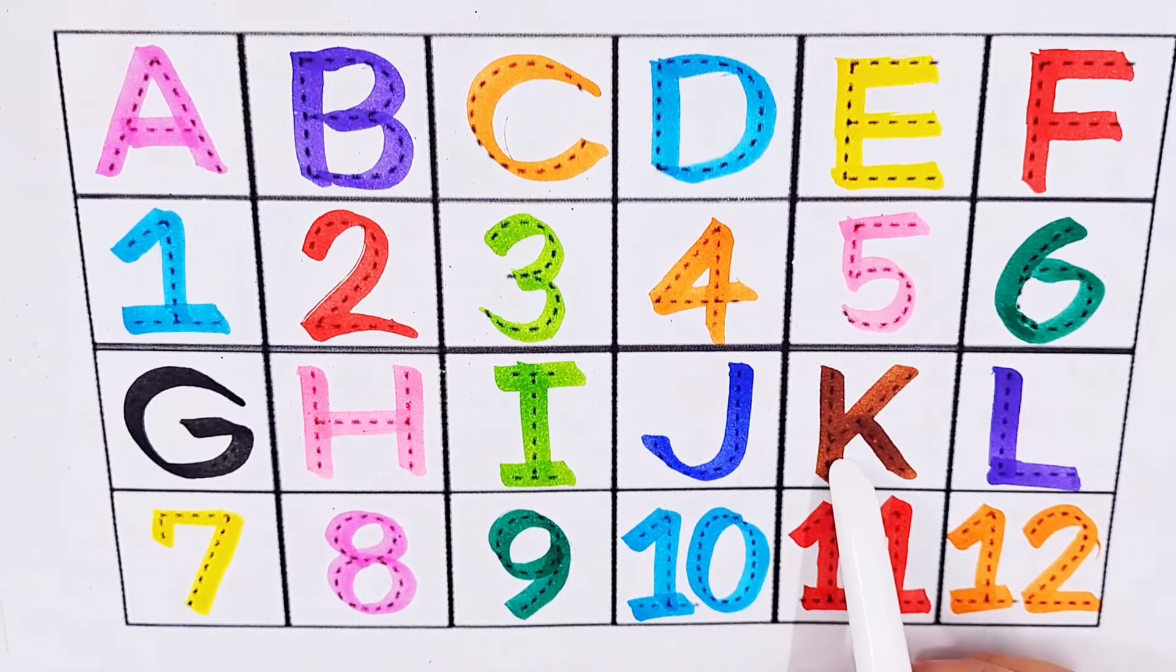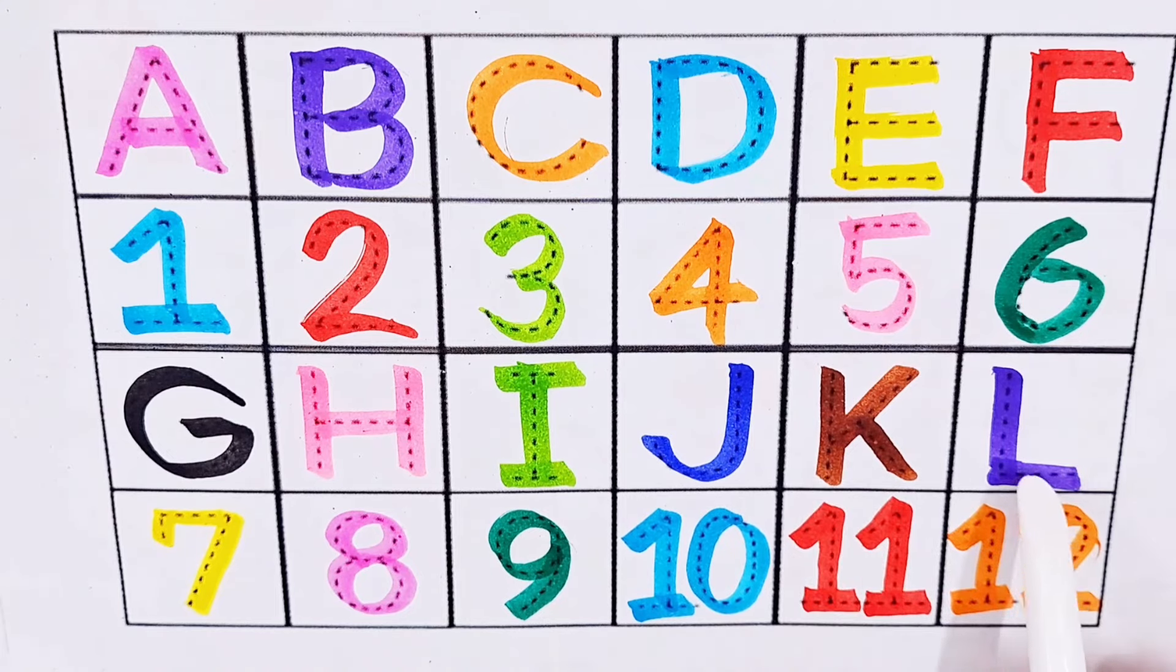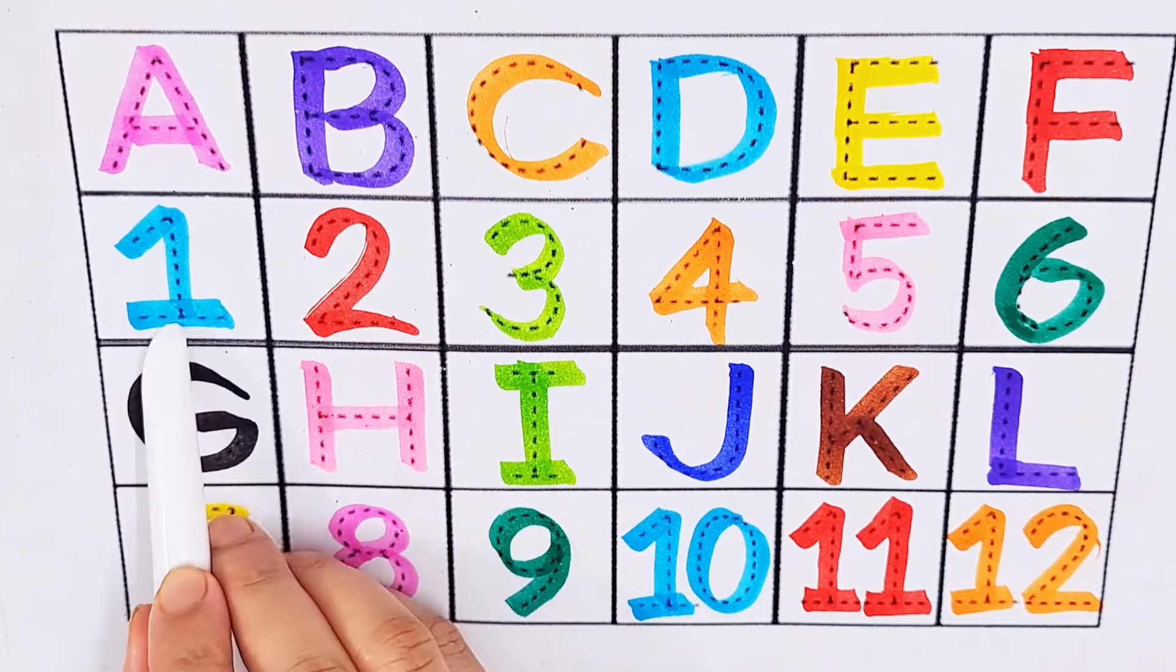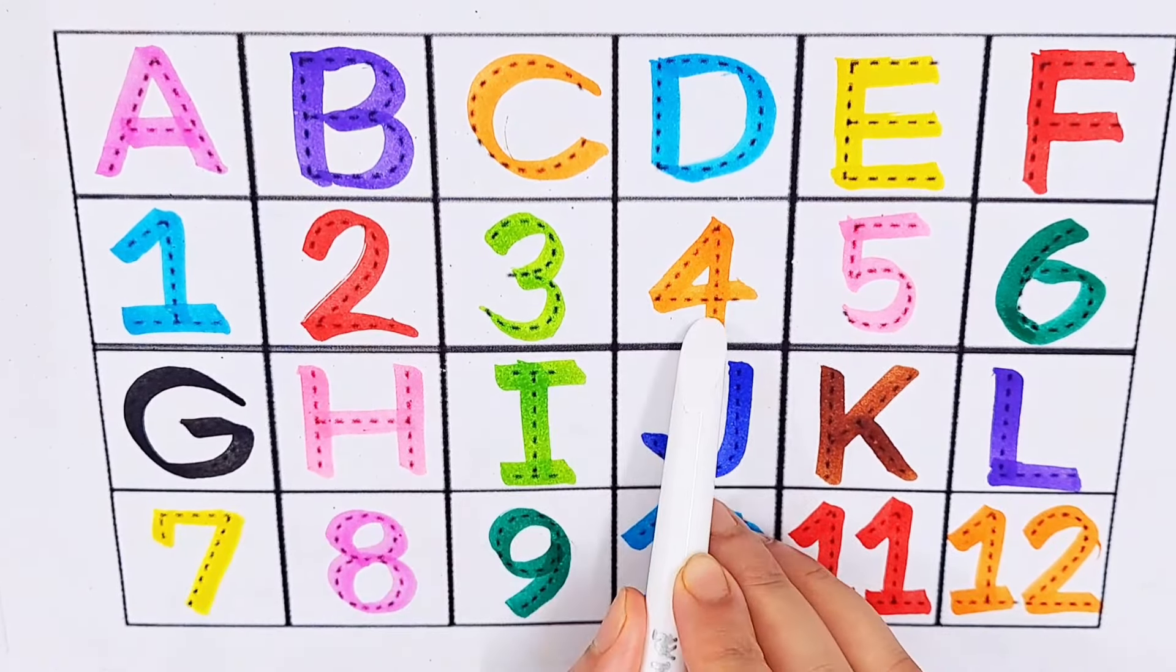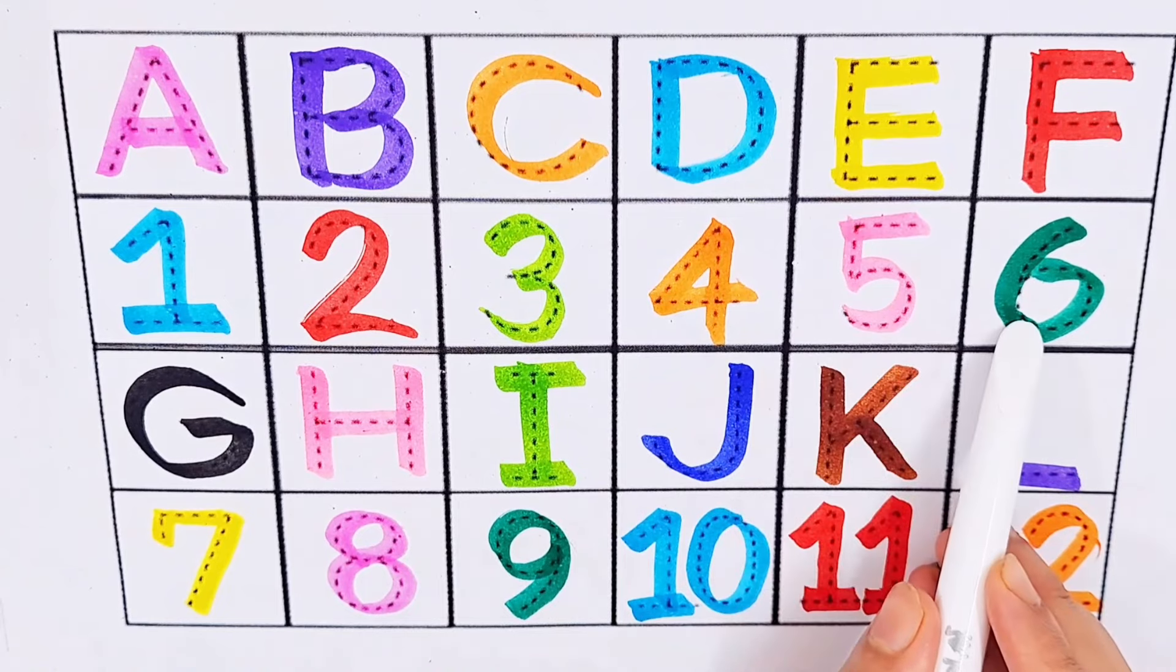K, K for kiwi. L, L for lemon. Number 1, number 2, number 3, number 4, number 5, number 6.